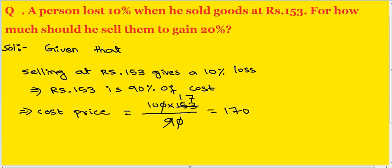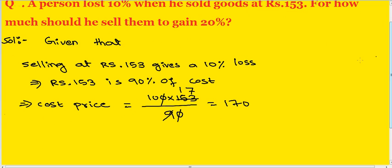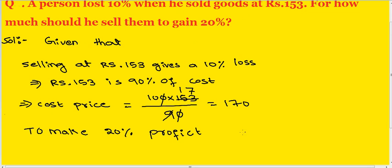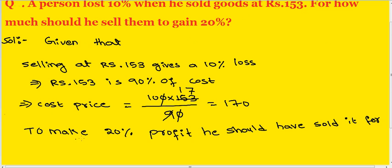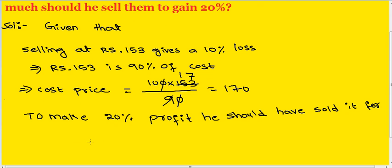What is the question? How much should you sell them to gain 20%? To make 20% profit, you should have sold it for: 100 plus 20 = 120, into 170, divided by 100.